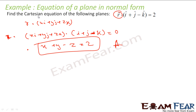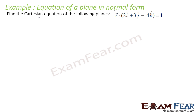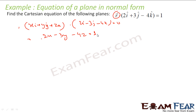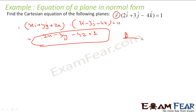One more question, similar to that — find the Cartesian form of the following equation. Just make R as xi plus yj plus zk. Then take the dot product with 2i minus 3j minus 4k equal to 1. Solving: 2 into x becomes 2x, minus 3 into y becomes minus 3y, minus 4 into z is minus 4z. And there is my answer. Very simple.